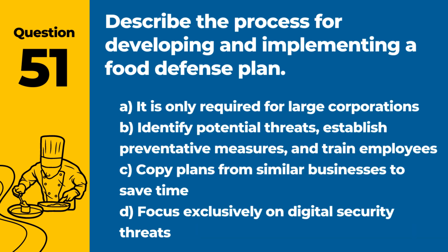Question 51. Describe the process for developing and implementing a food defense plan. Answer: B. Identify potential threats, establish preventative measures, and train employees. A comprehensive plan protects against intentional contamination.